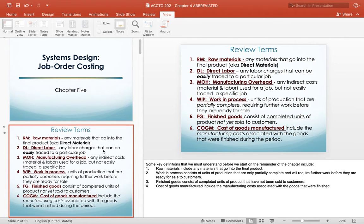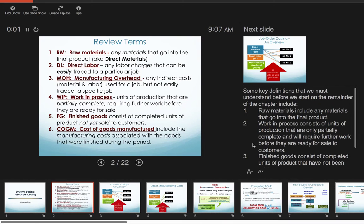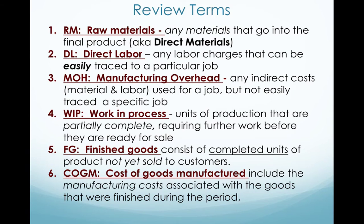These are taken directly from the PowerPoint slides that I've posted, but I thought you'd like to see these, so I'm going to walk through the important parts. These are your review terms you would know by now: raw material, direct labor, manufacturing overhead, work in process, finished goods, cost of goods manufactured, as well as cost of goods sold.